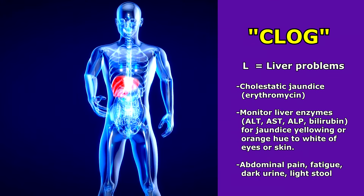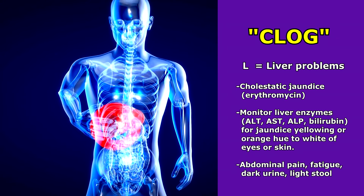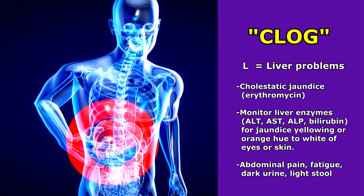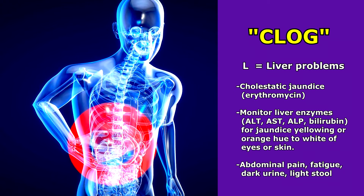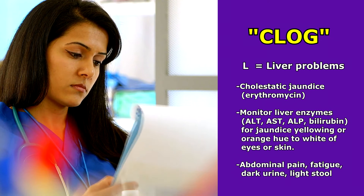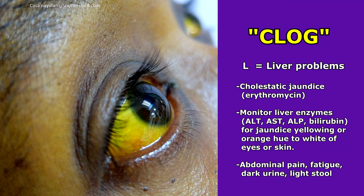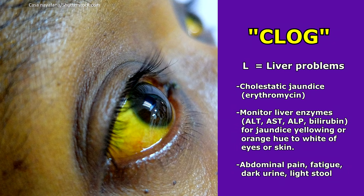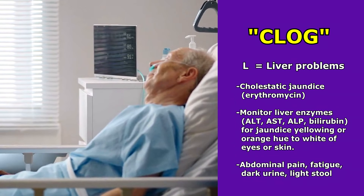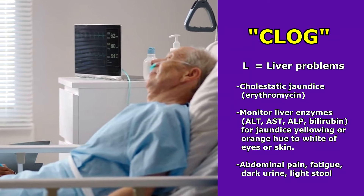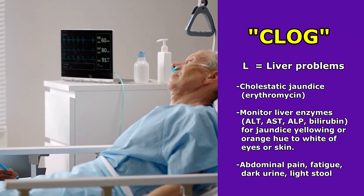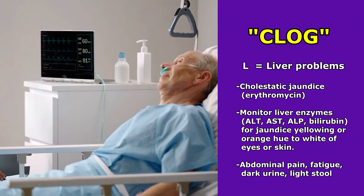L is for liver problems like cholestatic jaundice, which tends to happen with erythromycin, the oldest medication in this group. You'd want to monitor those liver enzymes — look at the ALT, the AST, and the bilirubin level — and assess the patient. Are they experiencing jaundice? Abdominal pain? Fatigue? Dark colored urine and light colored stool? The dark colored urine is where bilirubin is spilling over into the kidneys, and the stool looks light in color instead of normal dark brown.